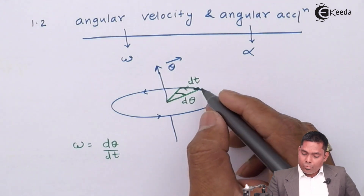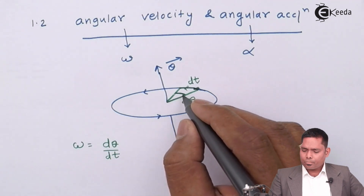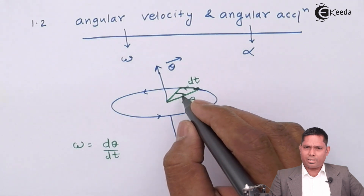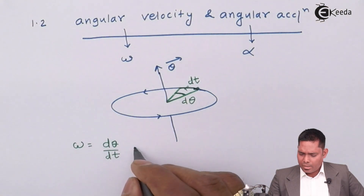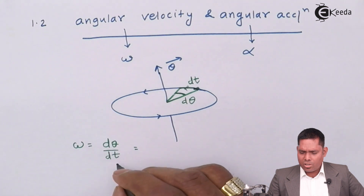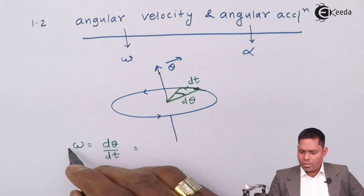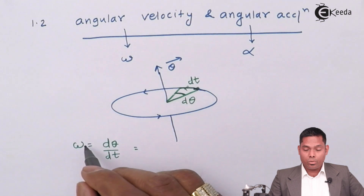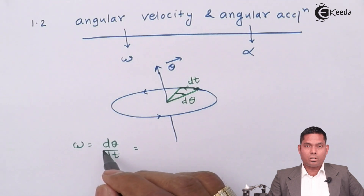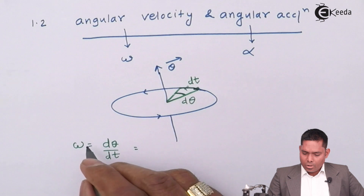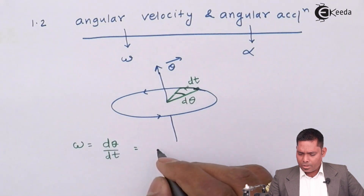If it takes more time to cover this angular displacement, that means the angular velocity is less — that means the body is moving slower. This is known as instantaneous angular velocity, and instantaneous is what we use when the displacement is very, very small. This is a differential change in the displacement, so this is the rate of change of displacement.